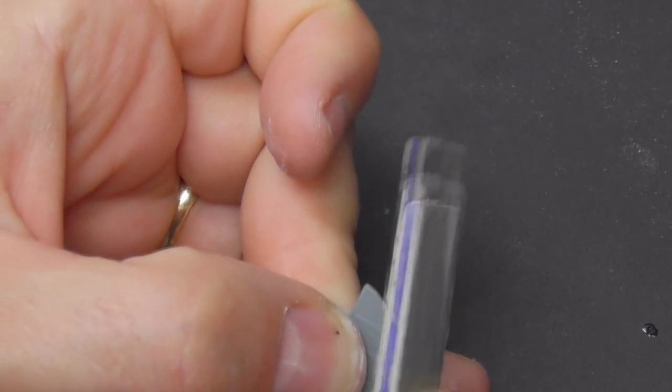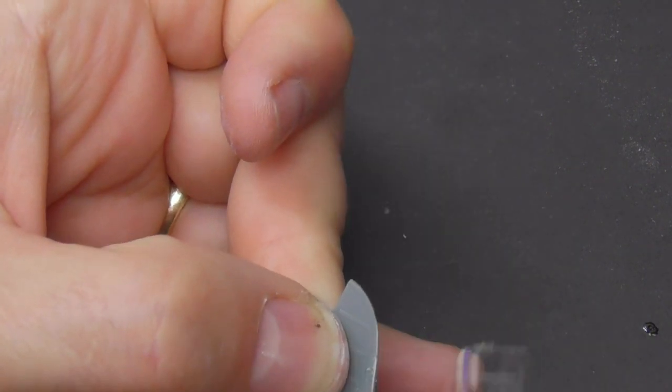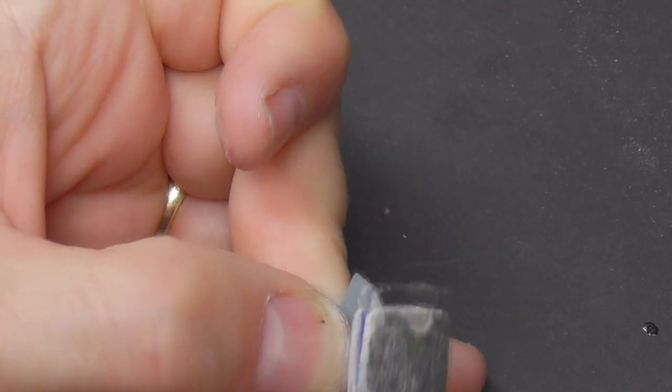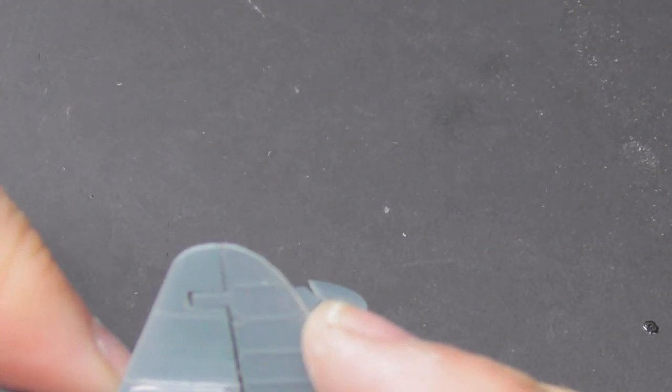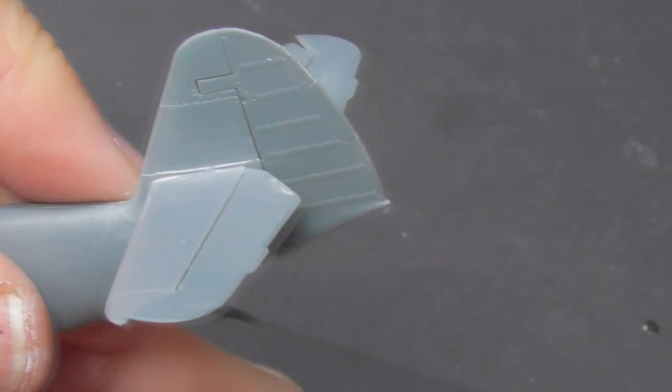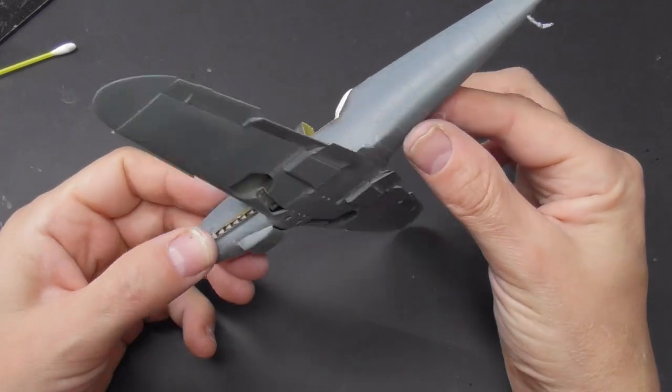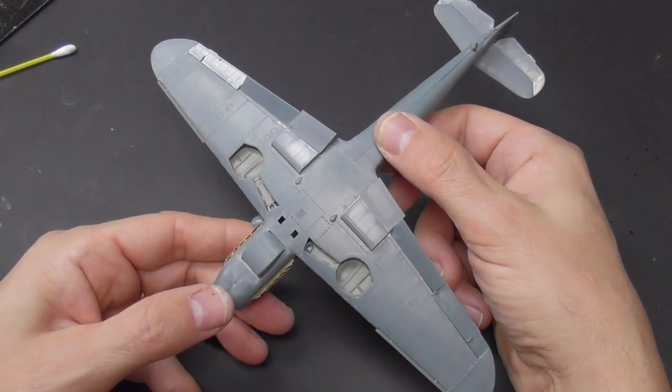So I mentioned earlier that I ended up removing the trim tabs on the rudder. Just looking at some of the photographs of, I'm not modeling an actual airplane here, I'm doing one from a particular unit, so I just copied some of the photos, the ones that I saw in the unit actually. And there is the airframe complete.